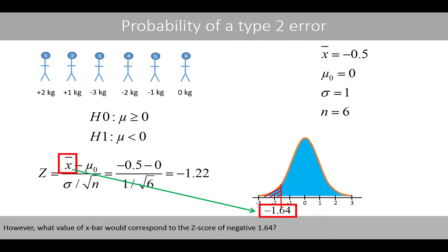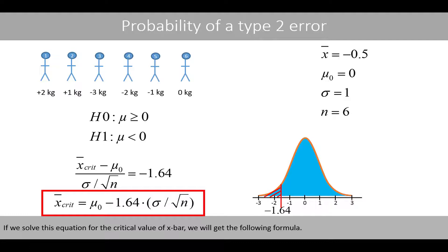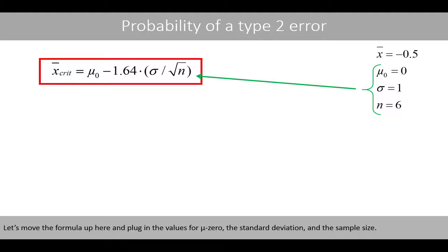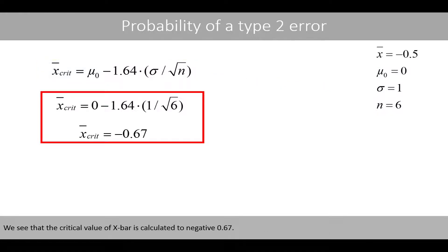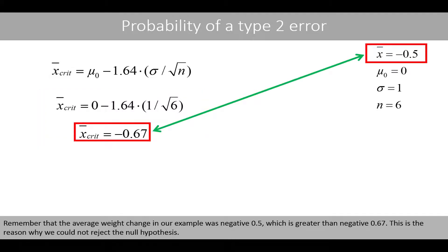However, what value of x-bar would correspond to the z-score of negative 1.64? If we solve this equation for the critical value of x-bar, we will get the following formula. Let's plug in the values for mu0, the standard deviation, and the sample size. We see that the critical value of x-bar is calculated to about negative 0.67. Remember that the average weight change in our example was negative 0.5, which is greater than negative 0.67. This is the reason why we could not reject the null hypothesis.